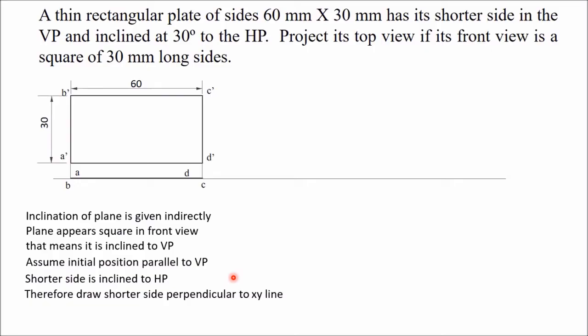This will be your top view of the given plate. B and C are visible and A and D are not visible. Now in the second stage we will draw the front view once again, because we know that the shape of this rectangle in front view is a square. Complete this square — draw one vertical line, take any suitable distance, and complete the square.